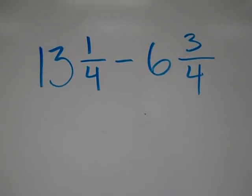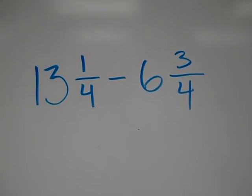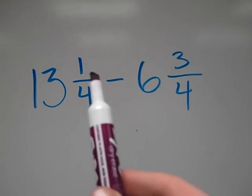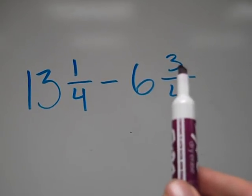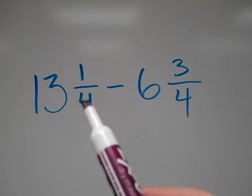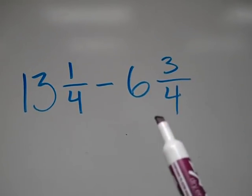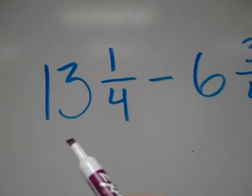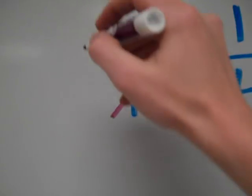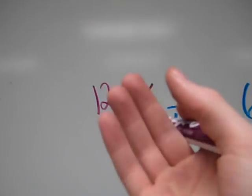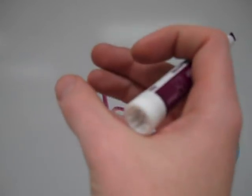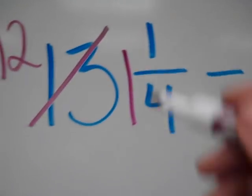In this next example, I've made common denominators already — and that should be the first thing you look for. Look at the denominators: are they the same? This one is, so I'm ready to go. I'm going to try to subtract the numerators: 1 minus 3. I can't take away 3 from 1 without going into negatives, so this is an example where you have to borrow. There's only 1 fourth over here and I'm supposed to take away 3 fourths, so I'm going to borrow from the 13.